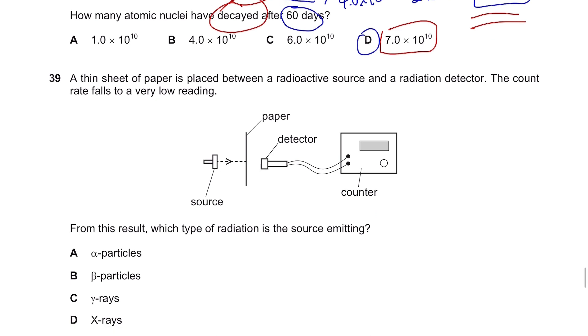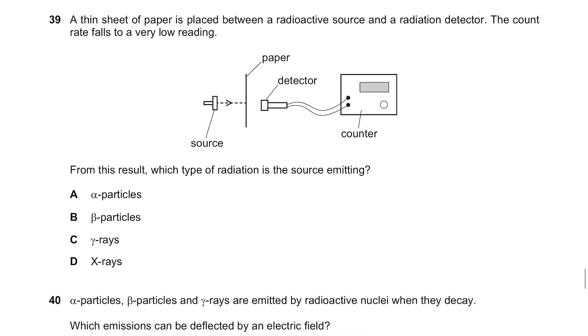Question 39. A thin sheet of paper is placed between a radioactive source and a radiation detector. The count rate falls to a very low reading. Okay, you just put a paper and then it already starts dropping. From this result, which type of radiation is the source emitting? If it's beta particles, gamma rays or x-rays, even if you put a paper in it, the readings won't decrease. They are not blocked by a paper. But for alpha particles, yeah, they are blocked by a thin sheet of paper. So, from this, you can know that the source is emitting alpha particles.